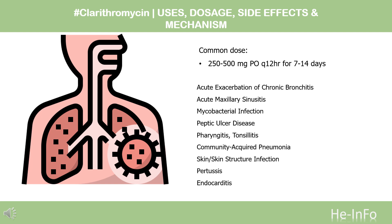For acute maxillary sinusitis, indicated for moderate infections caused by susceptible isolates of Haemophilus influenzae, Moraxella catarrhalis, or Streptococcus pneumoniae: 500 mg PO every 12 hours for 14 days. Extended release: 1,000 mg PO once daily for 14 days.